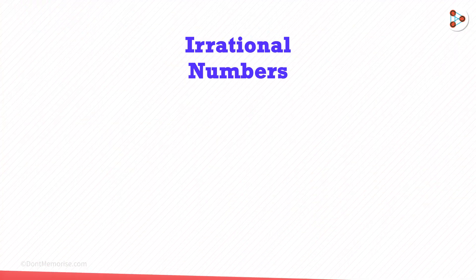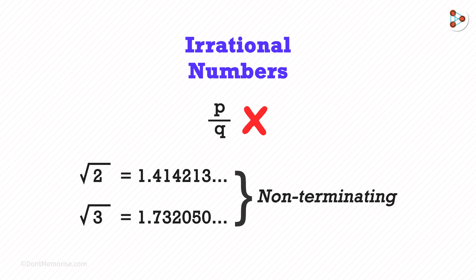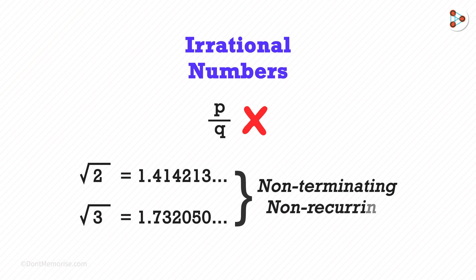But if we take irrational numbers which cannot be written in the p over q form like root 2 or root 3 and try writing them in the decimal format, we see that they are non-terminating, which means they don't end and are also non-recurring, which means there is no particular pattern here.